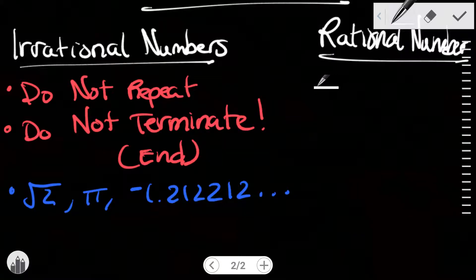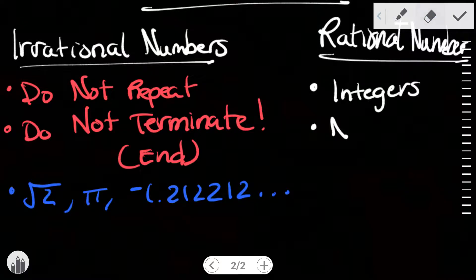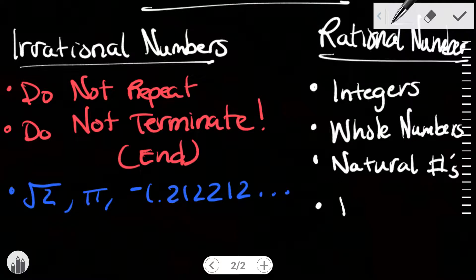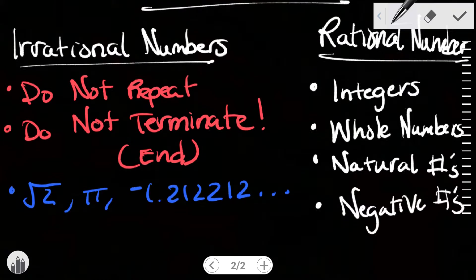For rational numbers, they can break down into a couple different categories: integers, whole numbers, natural numbers, and negative numbers.